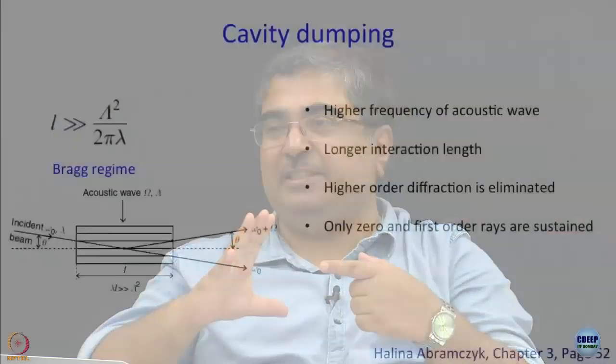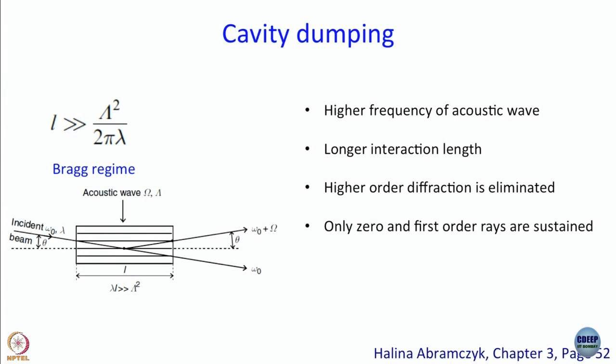What happens when you work in the Bragg regime? In the Raman-Nath regime, light passing through was diffracted on two sides and phase-modulated by amounts of n·omega. Here, that does not happen — all higher-order diffraction is eliminated. You don't get higher-order diffraction at all. Only two rays are sustained: the zeroth order (unmodulated omega) and the first order (omega_0 + capital Omega). That is what happens in the Bragg regime.